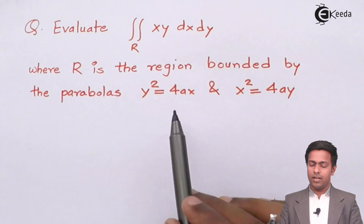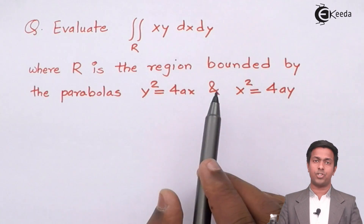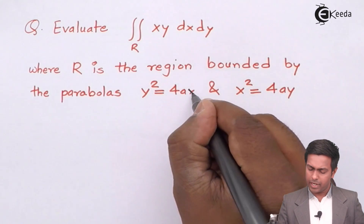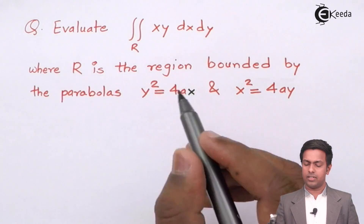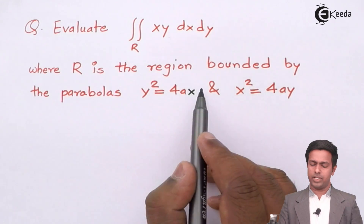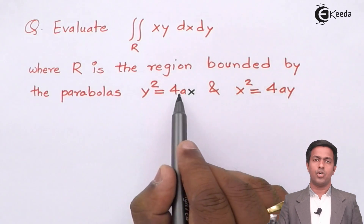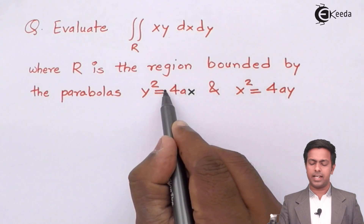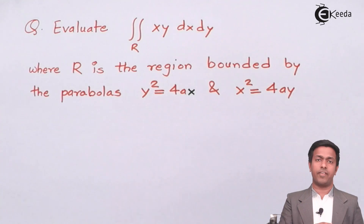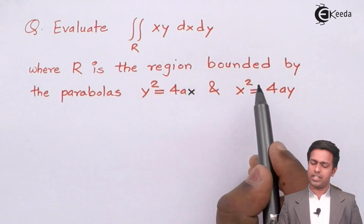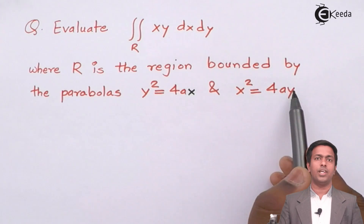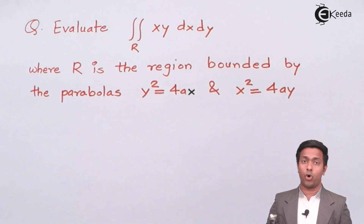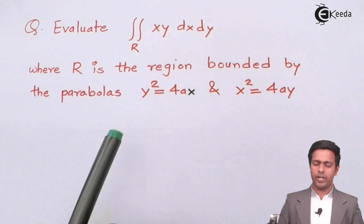In parabolas, one term is squared and the other is to the power one. y² = 4ax opens towards the right because x is positive; if x were negative it would open left. For x² = 4ay, since y is positive, the parabola opens upward; if y were negative it would open downward.